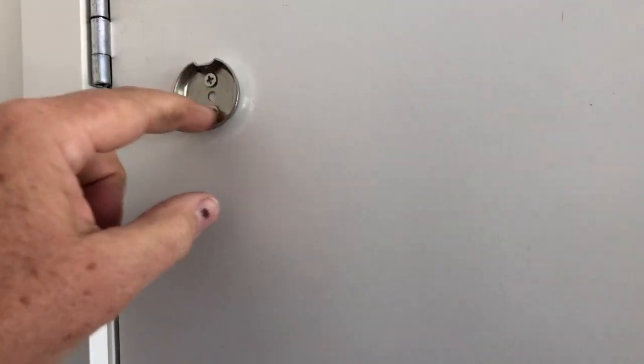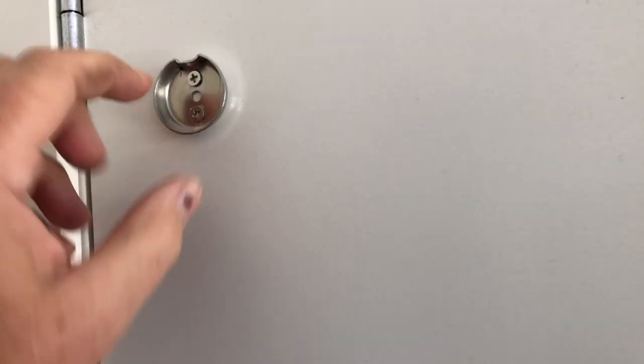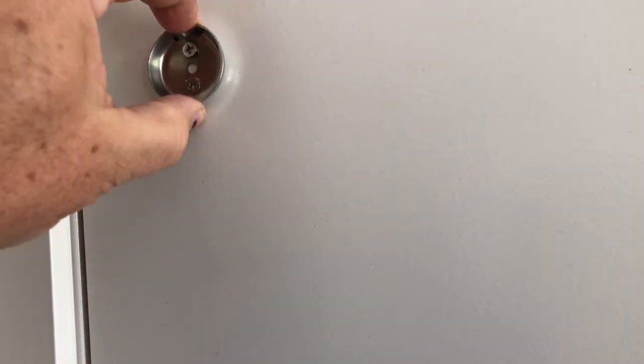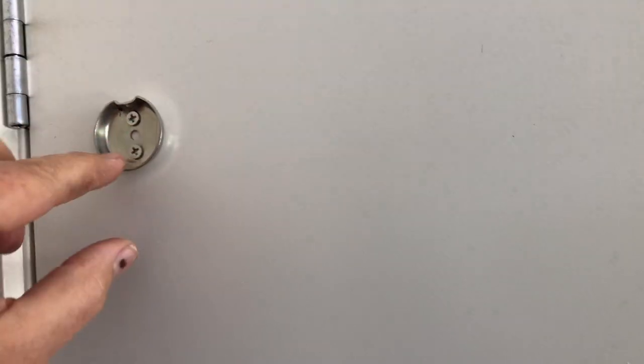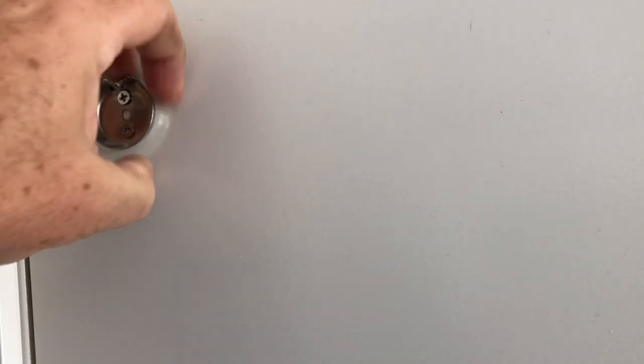If you've had some sort of disaster and it all goes loose, you can get some construction adhesive—I'll put a link to different stuff in the description. Put a blob of it behind, or if you're tightening up an old one, put some construction adhesive in the holes and a blob behind it, screw it back in, and then let it set before you put the thing back on. That'll hold it all nice and tight.